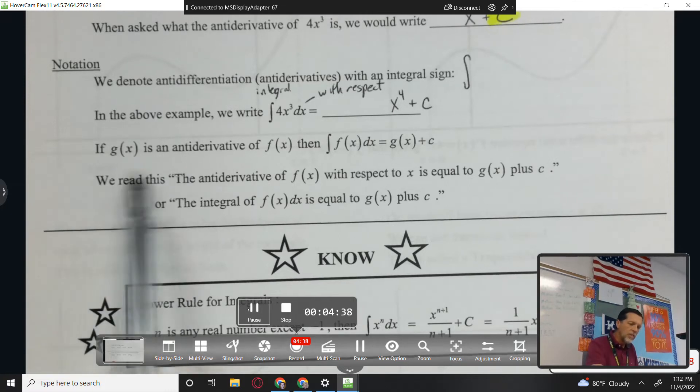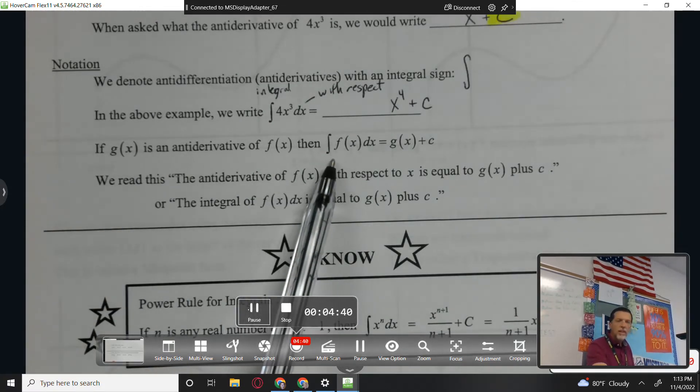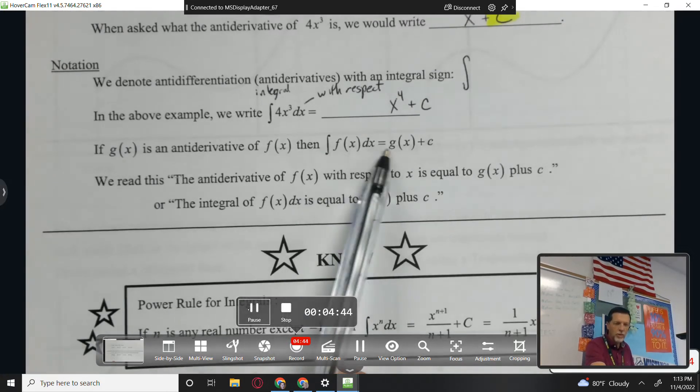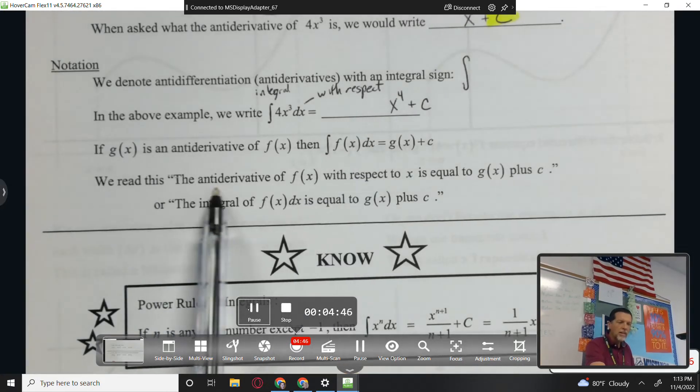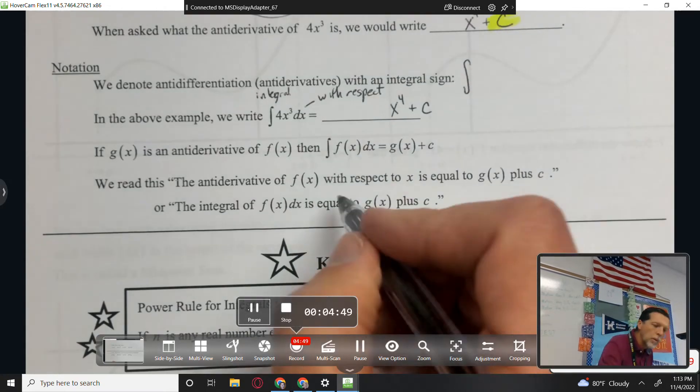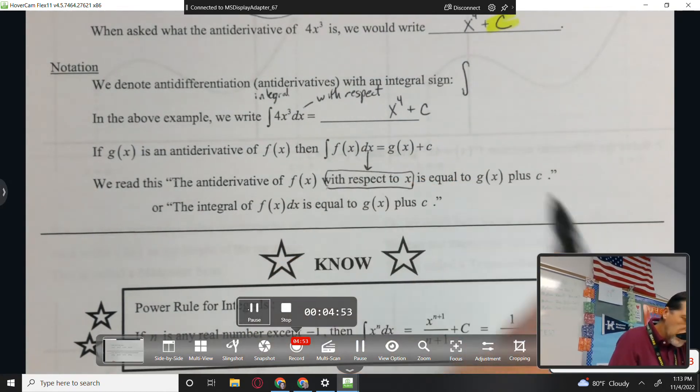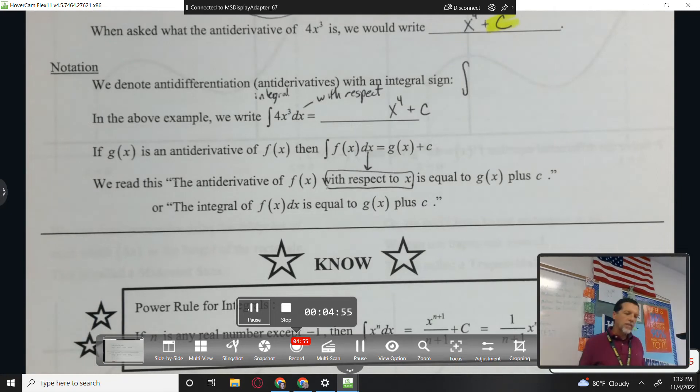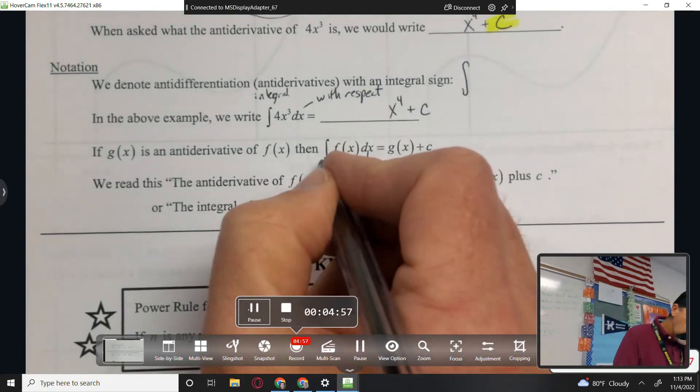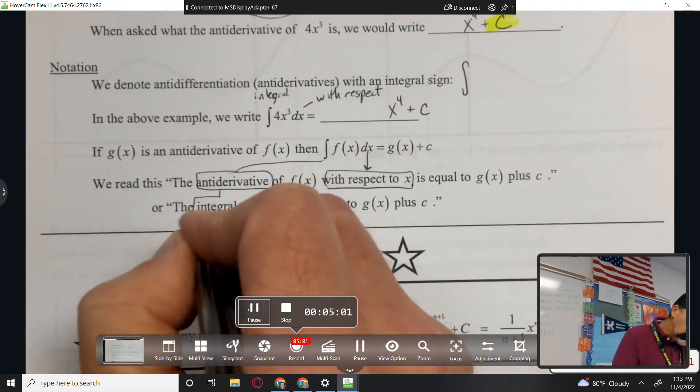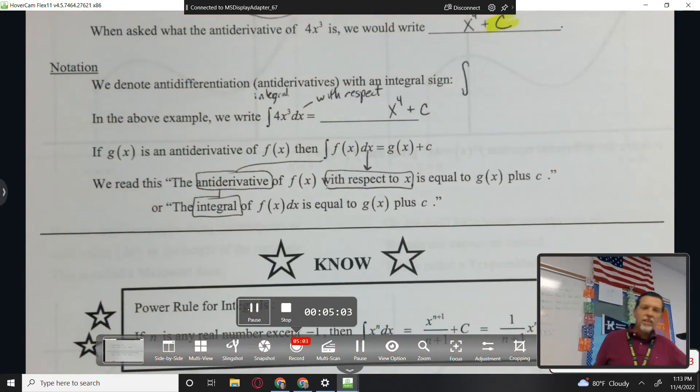If g of x is the antiderivative of f, then the integral of f is g. That's what that means. And we read this as the antiderivative of f with respect to x. That's the dx part, is equal to g of x plus c. Or the integral. So antiderivative and integral mean the same thing.